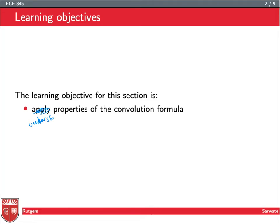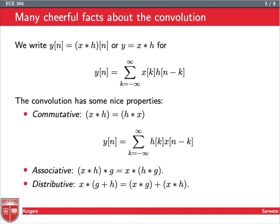So the goal is to be able to apply properties of the convolution formula, but maybe we should stick with saying understand first. You understand first, and then you apply. Okay, so here are a couple of facts about the convolution, which we'll go over in the next few slides. So here's just some notation first. We're going to write y[n] equals x star h of n, or y equals x star h, if the time index is sort of clear from context. And we're going to use that notation to write the convolution sum.